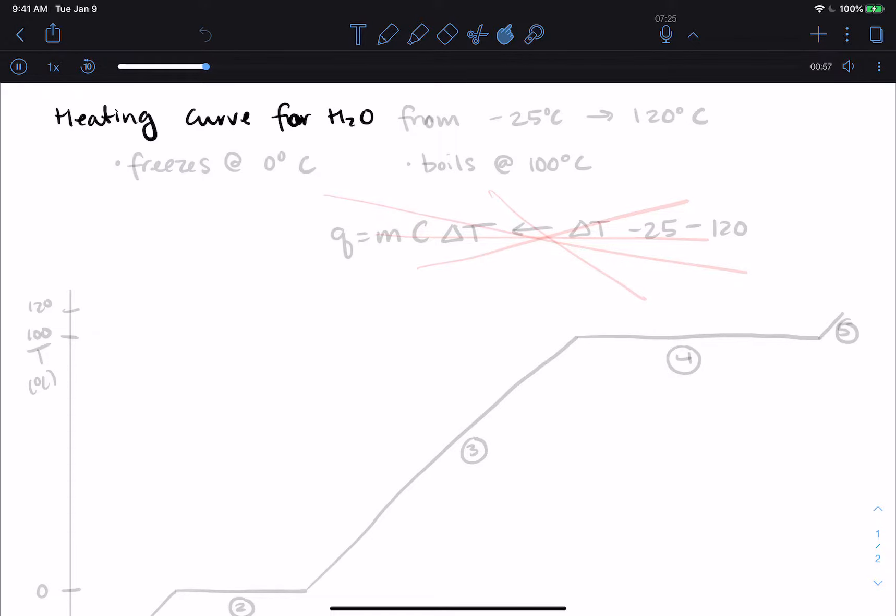And I'm going to go from minus 25 degrees to we'll say 120. We go below the freezing point to above the boiling point. So if it was not water, you would need to be given or you would need to look up the boiling and freezing point. Because it's water, let's just kind of list what we know. We know that it freezes at zero. We know that it boils at a hundred.